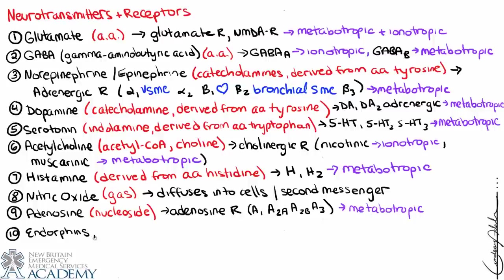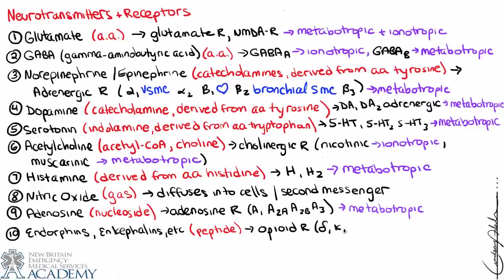Finally, endorphins and enkephalins fall into a category of neurotransmitters that are peptides — small chains of amino acids. They bind to opioid receptors, of which there are three classifications: delta, kappa, and mu. These are metabotropic as well, and this is where other opioids such as morphine and codeine bind.